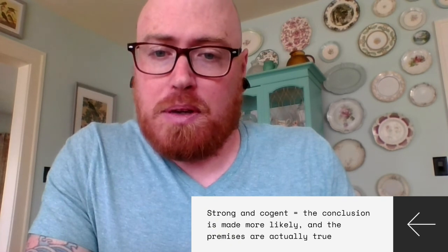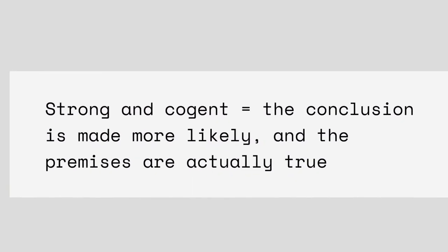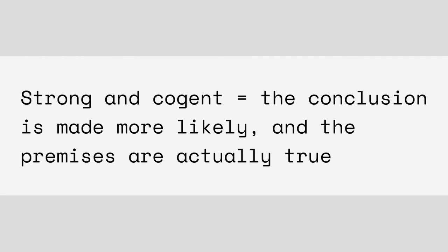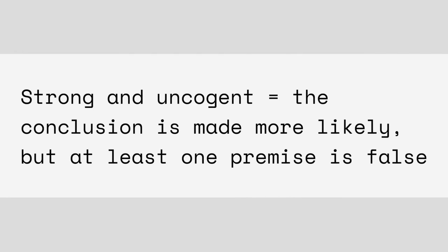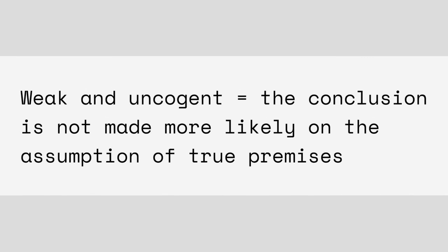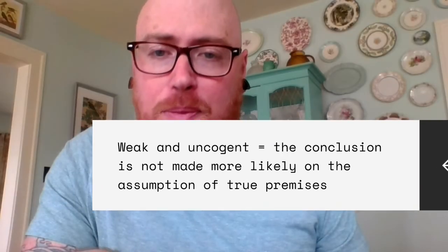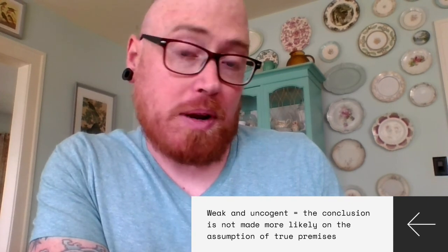As far as the three categories go: if an inductive argument is strong and cogent, the conclusion is made more likely and the premises are actually true — you've got a good shot that the conclusion is true. It could be strong and uncogent, meaning the conclusion is made more likely but at least one premise is false. And it could be weak and uncogent, meaning the conclusion is not made more likely on the assumption of true premises, and whether the premises are actually true or false doesn't matter. This brief description of deduction and induction will suffice for now — if you have any questions, don't hesitate to email me.